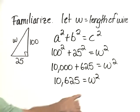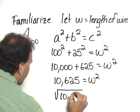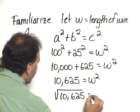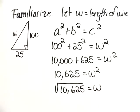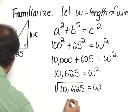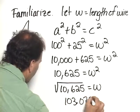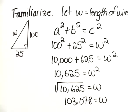Now to find w, we take the square root of both sides, so we'd have √10,625 = w. If we use a calculator, we can approximate that as 103.078 = w.